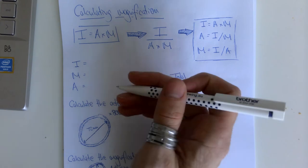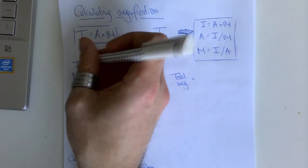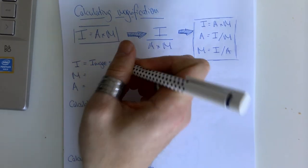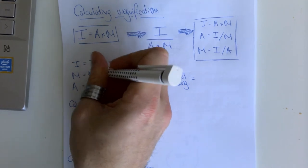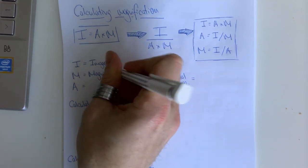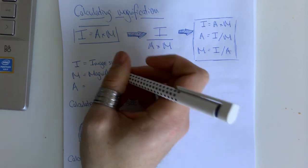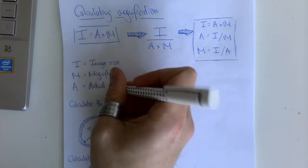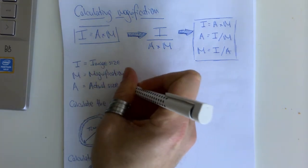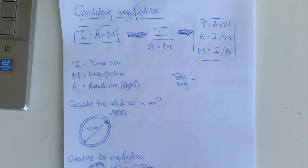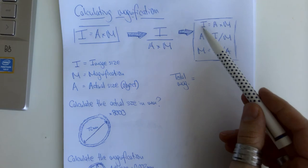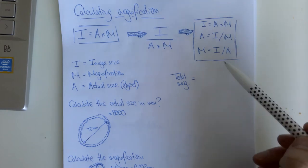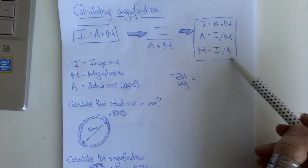The formula is I equals A times M. Breaking that down: I is the size of the image produced on a microscope. M is the magnification of that image — how much bigger is that image than the original object, such as times 10, 20, or times 1,000. A refers to the actual size of the object under the microscope. The three rearrangements are: image size equals actual size times magnification; actual size equals image size divided by magnification; magnification equals image size divided by actual size.